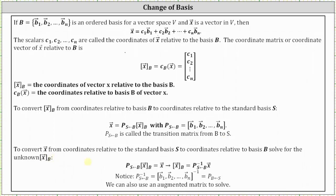To convert vector x from coordinates relative to the standard basis S to coordinates relative to basis B, we solve the equation for the coordinates of vector x relative to base B, which involves finding the inverse of the transition matrix from B to S. The coordinates of vector x relative to B equal the inverse of the transition matrix from B to S times the coordinates of vector x relative to the standard basis S. This inverse matrix is equal to the transition matrix from S to B, which is what we need to go from coordinates in S to coordinates in B.